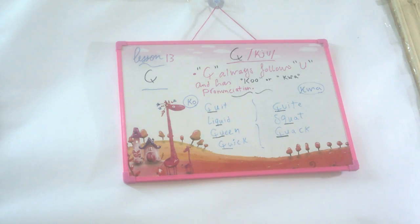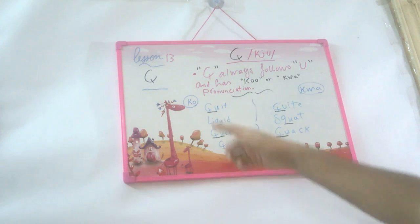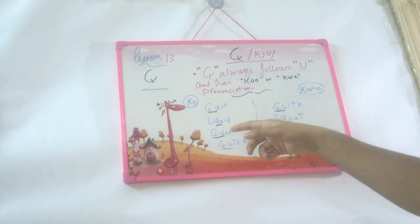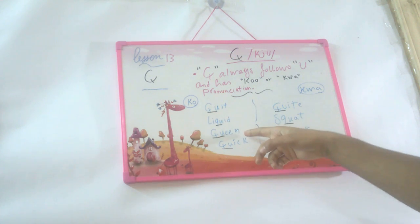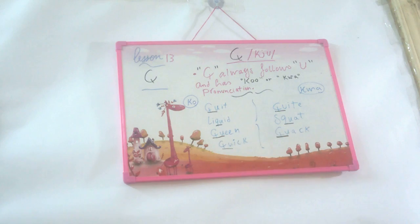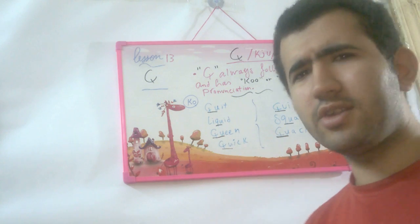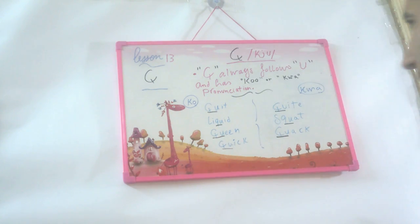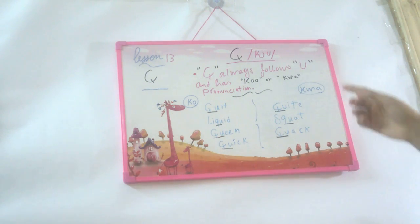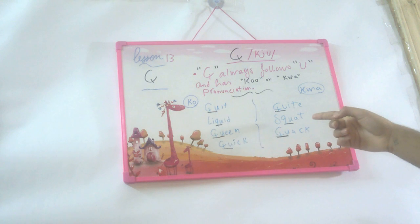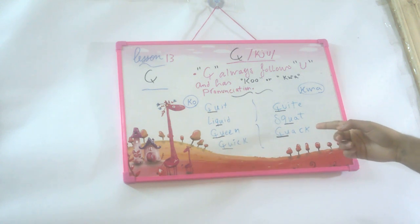For example, we're going to start with 'kw' like quit, liquid, queen, quick — these are short. And 'kw' like quite, squat, quack.